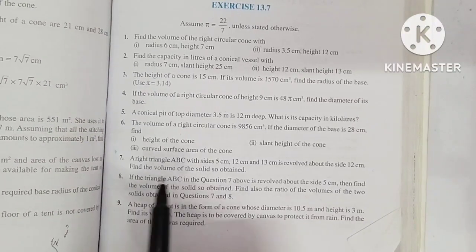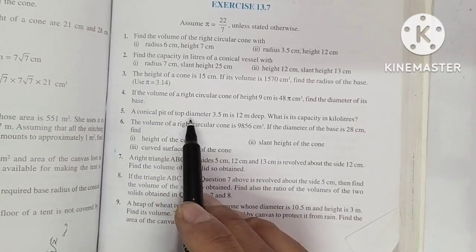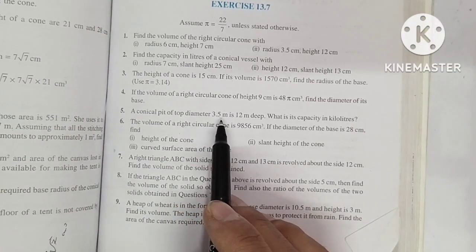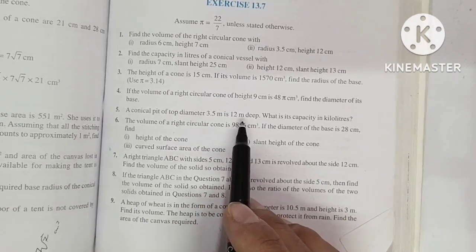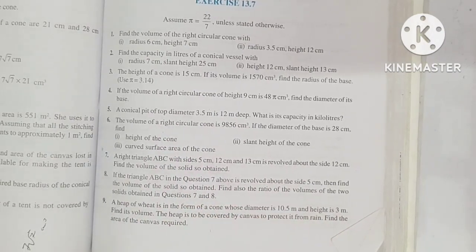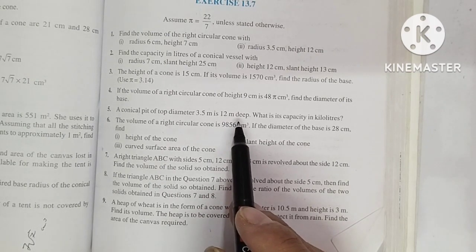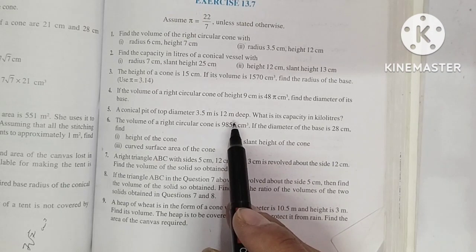Hello everyone, in this video I am doing question number 5 of exercise 13.7. A conical pit with top diameter 3.5 meters is 12 meters deep. A conical pit has top diameter 3.5 meters and its depth is 12 meters.